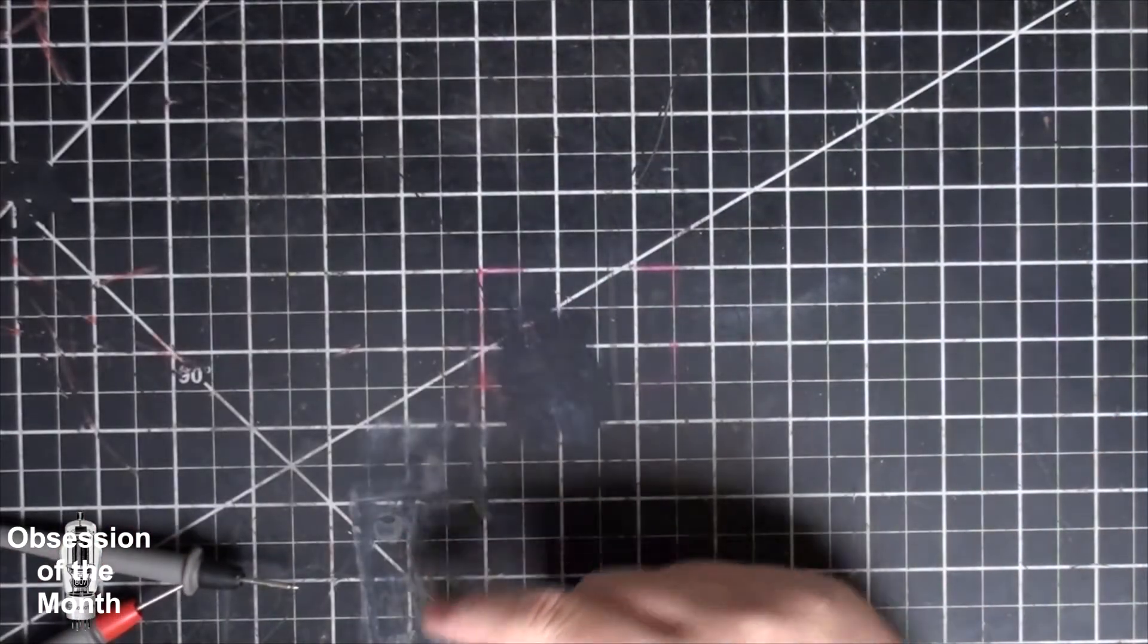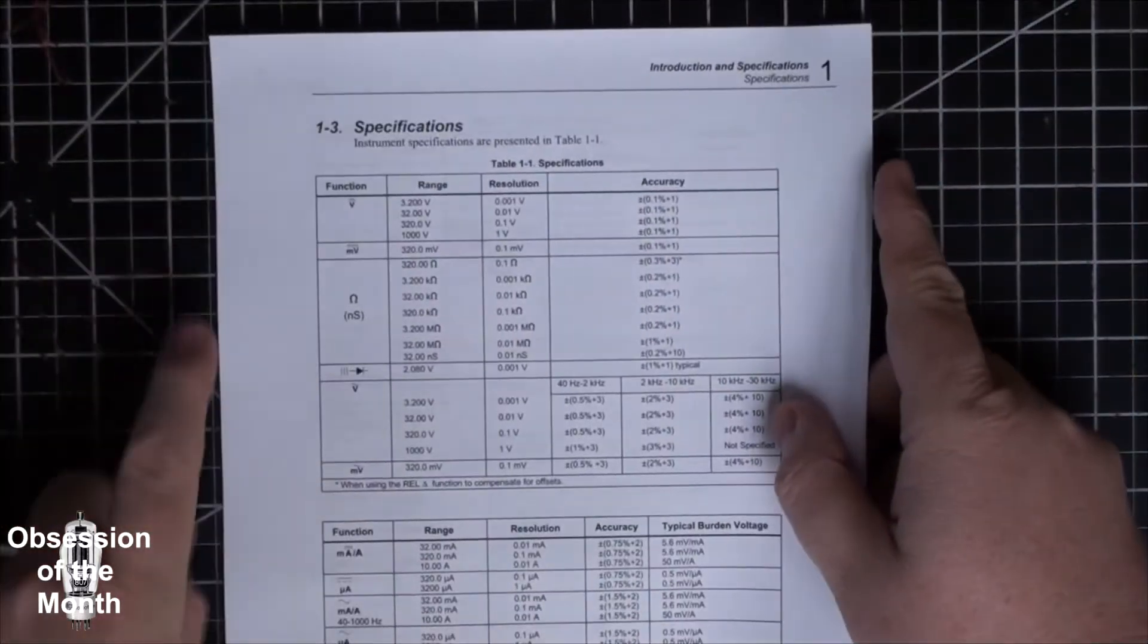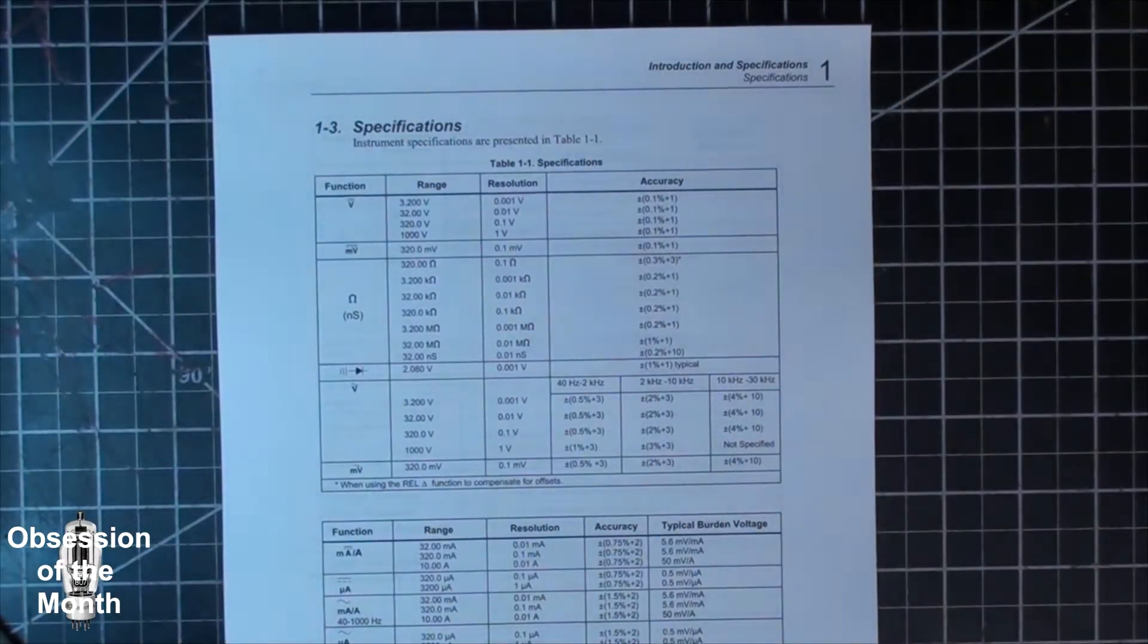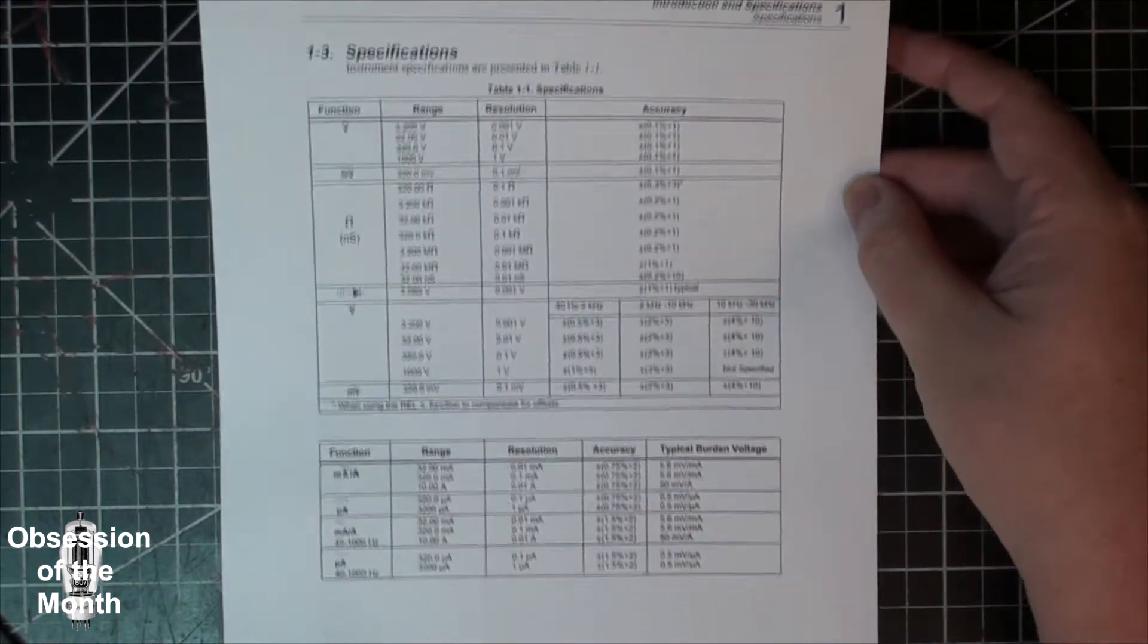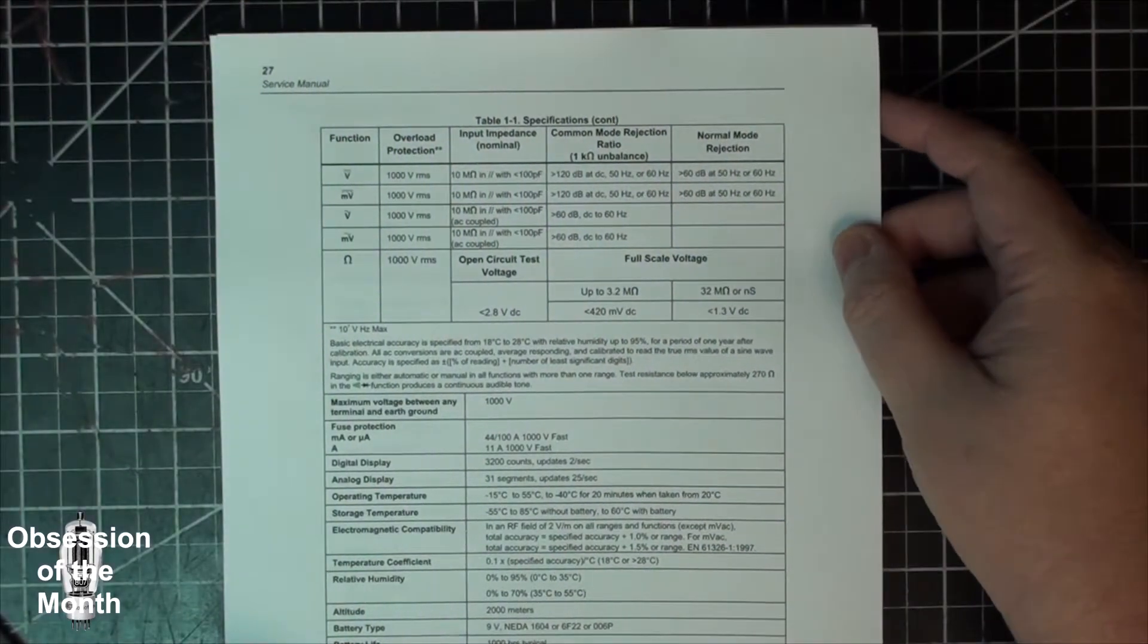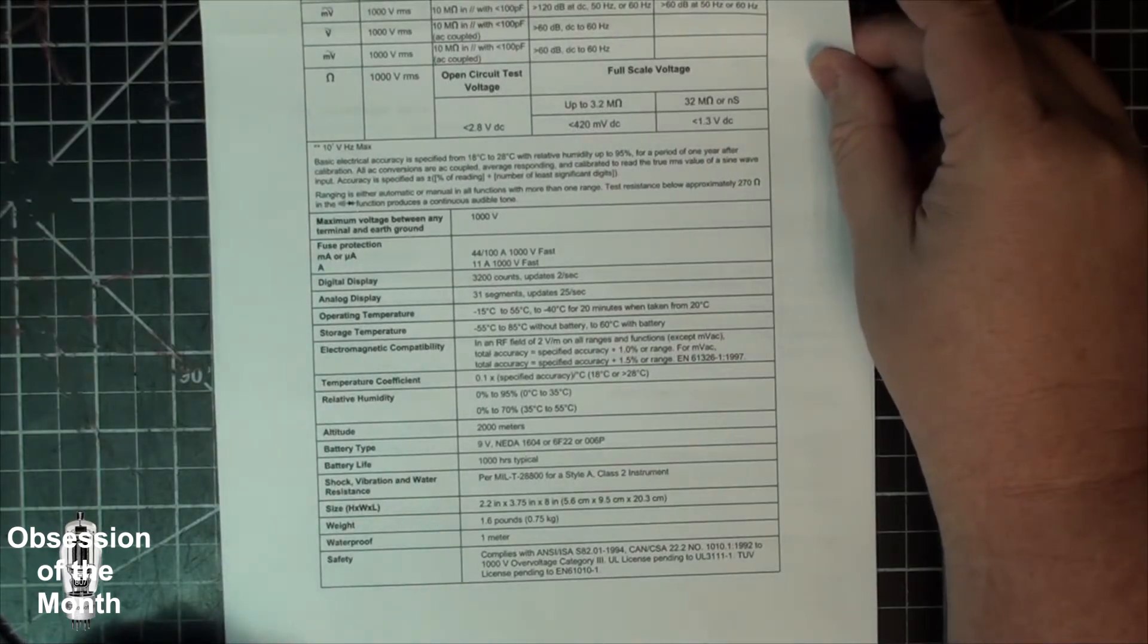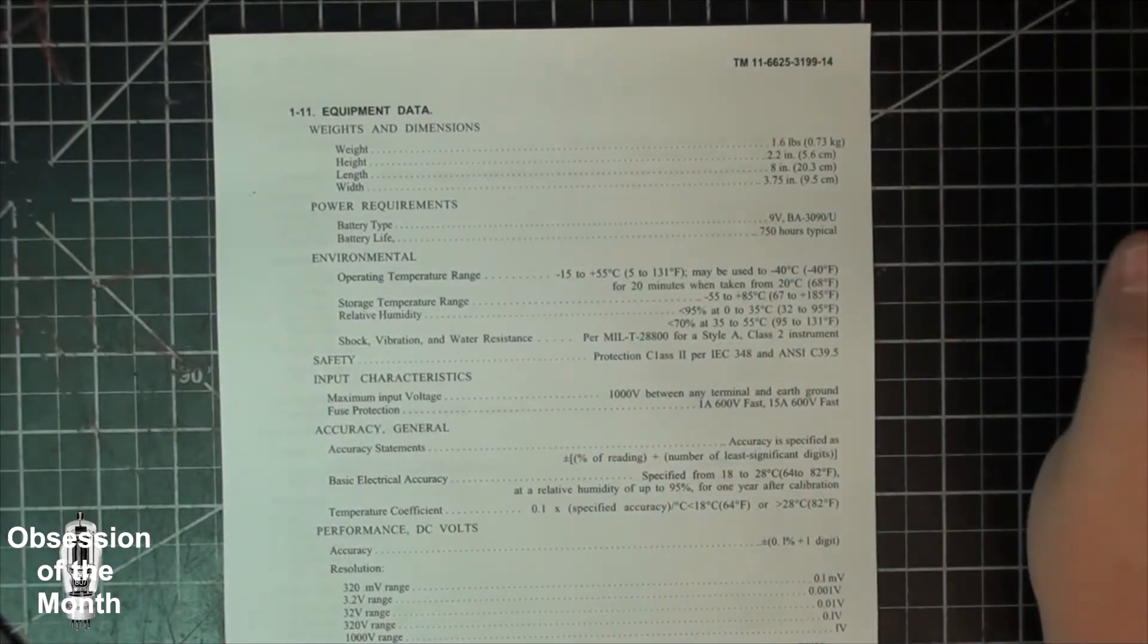Before I get started, let's pull up - these are specifications for the Fluke 27. We'll get to the FM version here in a second, so if you want to look at the freeze frame or read any of this you can. So these are the specifications for the 27FM.